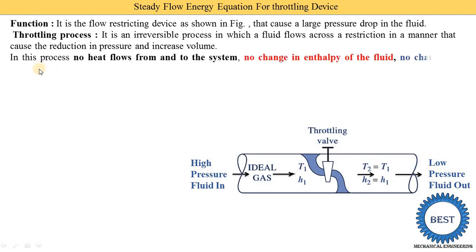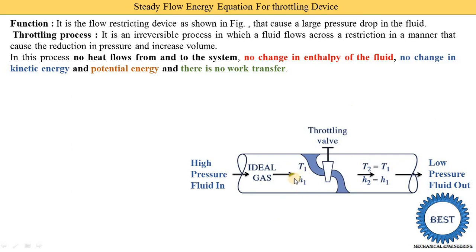During the throttling process, no heat flows from or to the system — we are not supplying any heat to the throttling device and the throttling device is not rejecting any heat to the surroundings. That means Q is equal to zero. There is no change in enthalpy, so H2 is equal to H1. No change in kinetic energy — velocity at inlet and outlet are the same, C1 equals C2. No change in potential energy, Z1G equals Z2G, and there is no work transfer, so W is equal to zero.